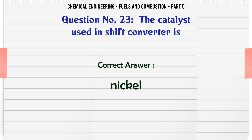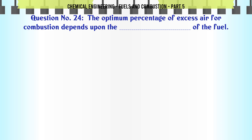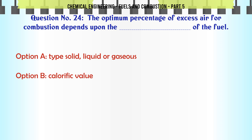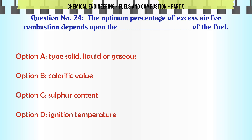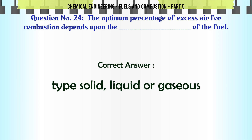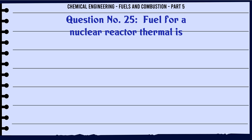The optimum percentage of excess air for combustion depends upon the __ of the fuel: A. Type — solid, liquid or gaseous. B. Calorific value. C. Sulfur content. D. Ignition temperature. The correct answer is type — solid, liquid or gaseous.